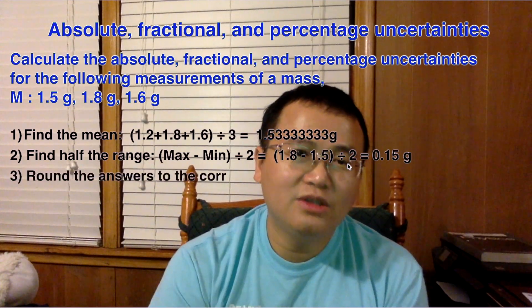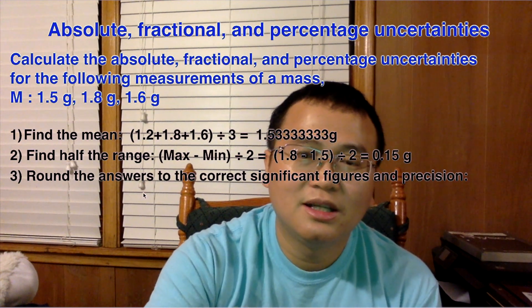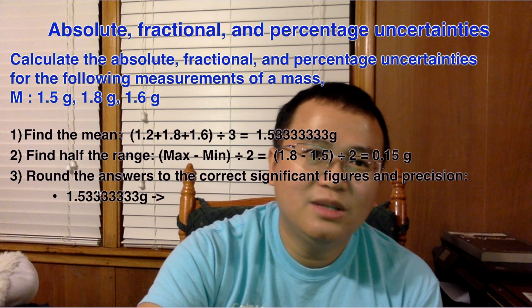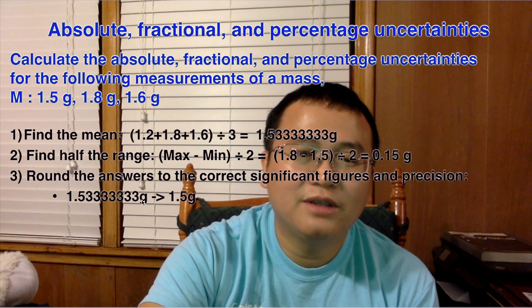The other thing that you need to do is you need to round the answer to the correct significant figures and precision. So how should we do that? We notice that the calculator gives us 1.53333333 and goes on forever grams.